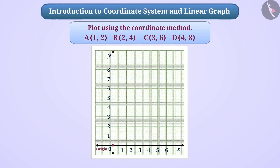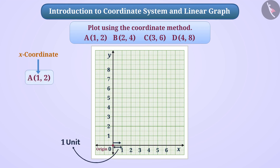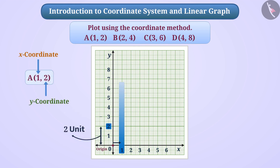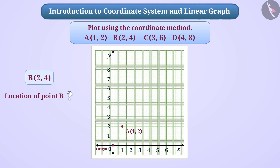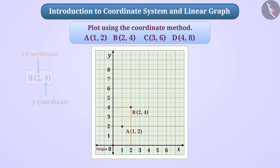The x-coordinate of point A is 1, which tells us that we have to move 1 unit to the right from the origin point. Since the y-coordinate is 2, we now have to move 2 units up. We will mark point A at the place obtained. Similarly, the location of point B can be found from x-coordinate 2 and y-coordinate 4. We can also show the location of point C and point D in this way.